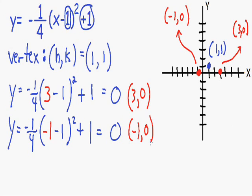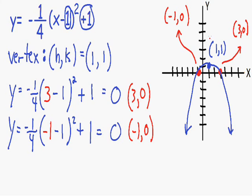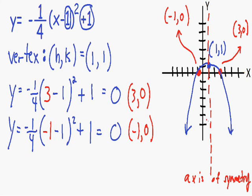Now that we have our vertex and two additional points plotted, we can draw a semi-accurate graph. Start at the vertex and draw a curved line through the point on the right, and another curve through the point on the left. If the homework asks for the axis of symmetry, that is the line going directly through the center of the parabola. Every coordinate on this line has an x-value of positive one, so the equation of the axis of symmetry is x equals 1.